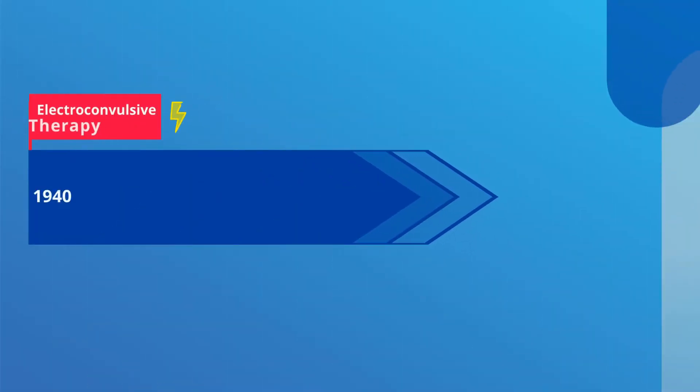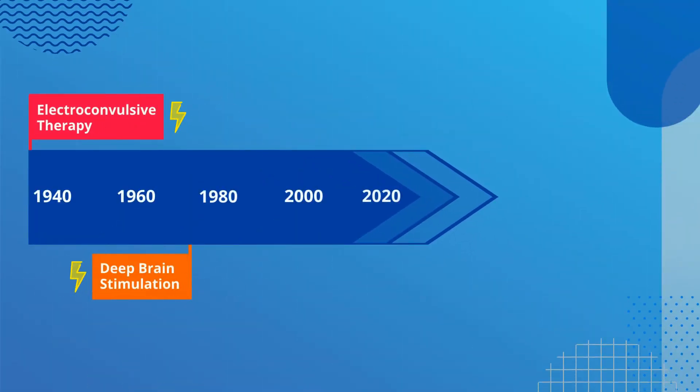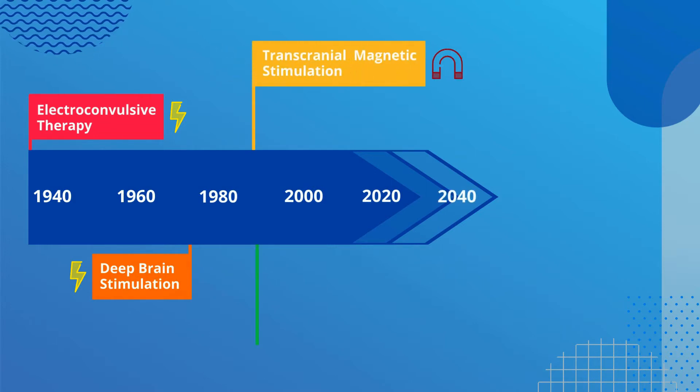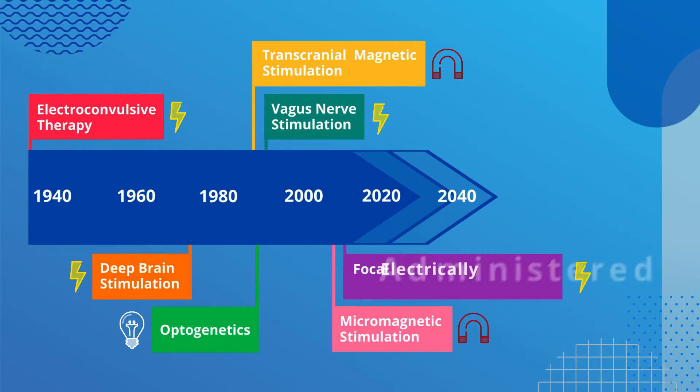Beginning with electroconvulsive therapy, treatment has progressed through electronic stimulation into novel methods such as light and magnetic fields. In later years, implants may be almost indistinguishable from neurons.